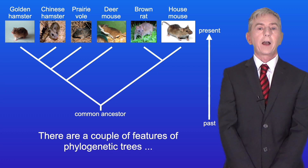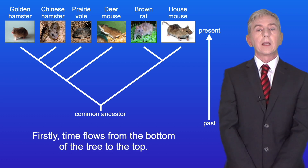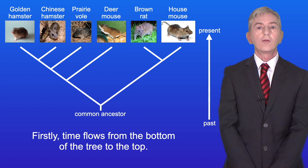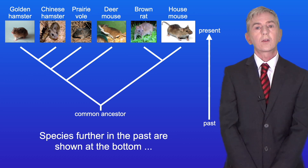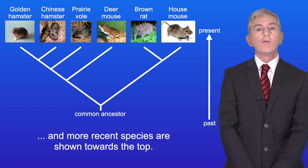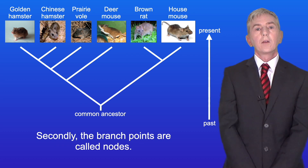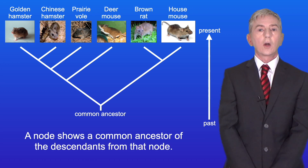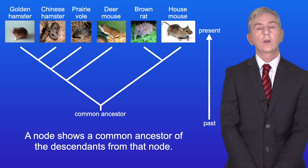There are a couple of features of phylogenetic trees that you need to understand. Firstly, time flows from the bottom of the tree to the top, so species further in the past are shown at the bottom and more recent species are shown towards the top. Secondly, the branch points are called nodes. A node shows a common ancestor of the descendants from that node.